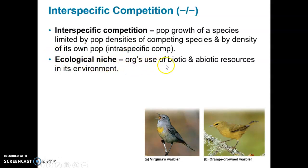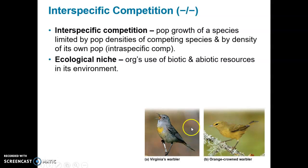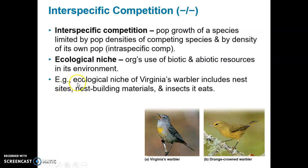This leads into what's called the ecological niche — the organism's use of biotic and abiotic environmental resources. In the example of the Virginia's warbler and the orange-crowned warbler, both birds share similar resources, so they have a similar ecological niche. A niche is sometimes referred to as an ecological role or job — a predator's niche is predation. For these birds, their niche is usually to be a consumer of seeds and/or insects. The ecological niche of the Virginia's warbler includes nest sites, nest building materials, and the insects it eats — similar to the orange-crowned warbler.